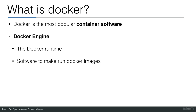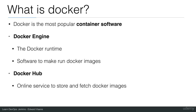If you followed the previous demo, you saw that we first installed the Docker engine and then ran the Jenkins image. The Jenkins image was provided to us up front — someone created it and we ran it as a container. When we pulled the Jenkins image it came from Docker Hub, which is an online service to store and fetch Docker images. Someone created the Jenkins image, uploaded it to Docker Hub, and then we downloaded and started the container.